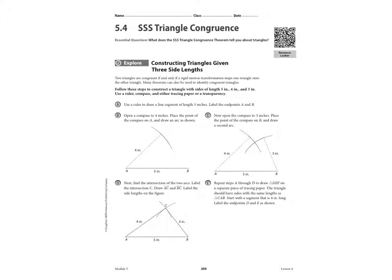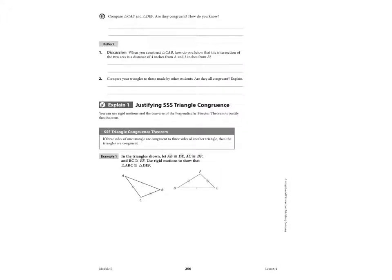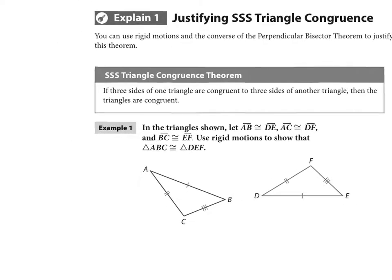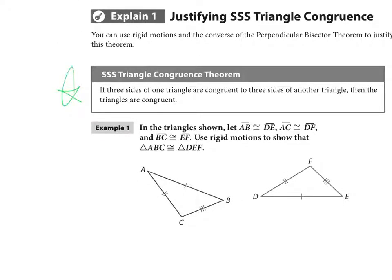So 5.4 is on page 255, and now we're going to do side, side, side. So turn to page 256, and here is the theorem. If three sides of a triangle are congruent to three sides of another triangle, then the triangles are congruent.